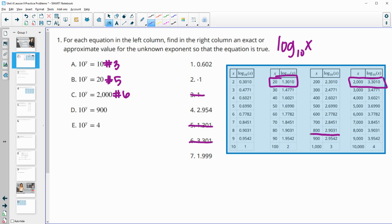Find 900. So 900 is 10 to the 2.9542. So that's number four.